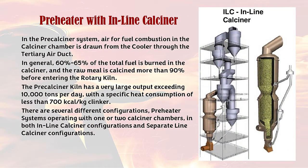In the precalciner system, air for fuel combustion in the calciner chamber is drawn from the cooler through the tertiary air duct. In general, 60 to 65 percent of the total fuel is burned in the calciner, and the raw meal is calcined more than 90 percent before entering the rotary kiln. The precalciner kiln has a very large output exceeding 10,000 tons per day, with a specific heat consumption of less than 700 kilocalories per kilogram clinker. There are several different configurations of preheater systems operating with one or two calciner chambers, in both inline and separate line calciner configurations.